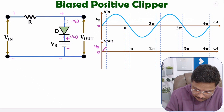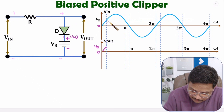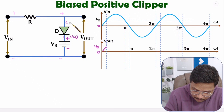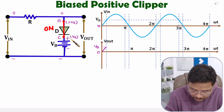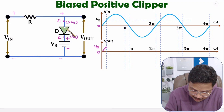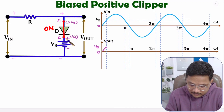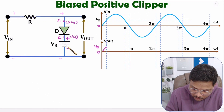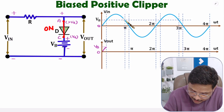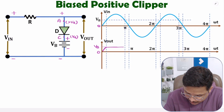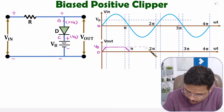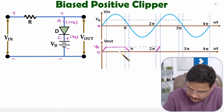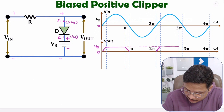Now let us understand what will happen after this. If voltage at the anode is greater than VB, then the anode will be positive with respect to cathode, and this diode will come into forward bias. If the diode comes into forward bias it will act like a short circuit, and the output voltage will be VB — a constant DC supply. So from here the voltage will be constant VB. From 0 to VB it will be similar to input, and greater than VB we are clipping the waveform.